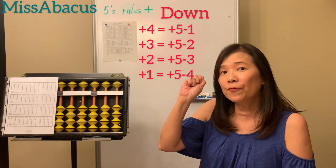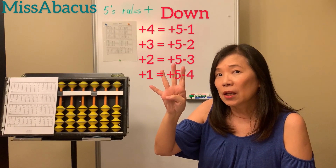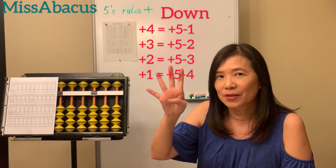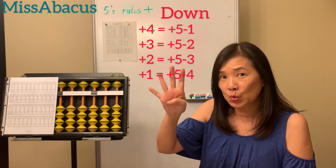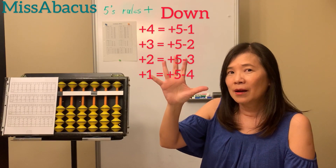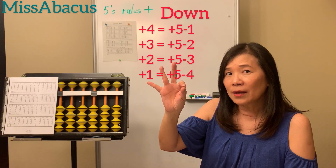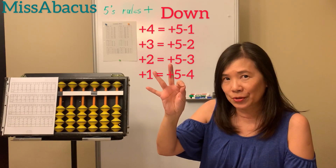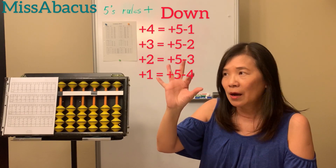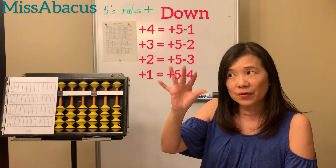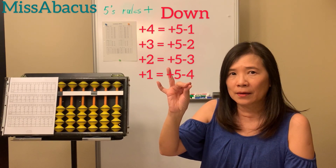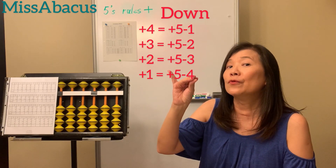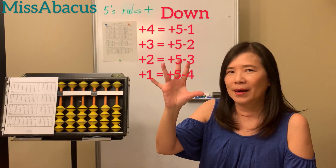For plus four, if you use five you need minus one — so five minus one equals four. If plus three, you use five then you need minus two. If you plus two, you use five minus three. Back to plus one, you need to do five minus four.